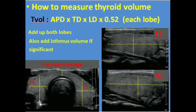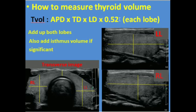How to measure the thyroid volume: it is very simple, by multiplication of the anterior-posterior diameter by the transverse diameter and by the longitudinal diameter of each lobe. These are multiplied by 0.52, which gives us the volume of each lobe. The volumes of each lobe are then added together.